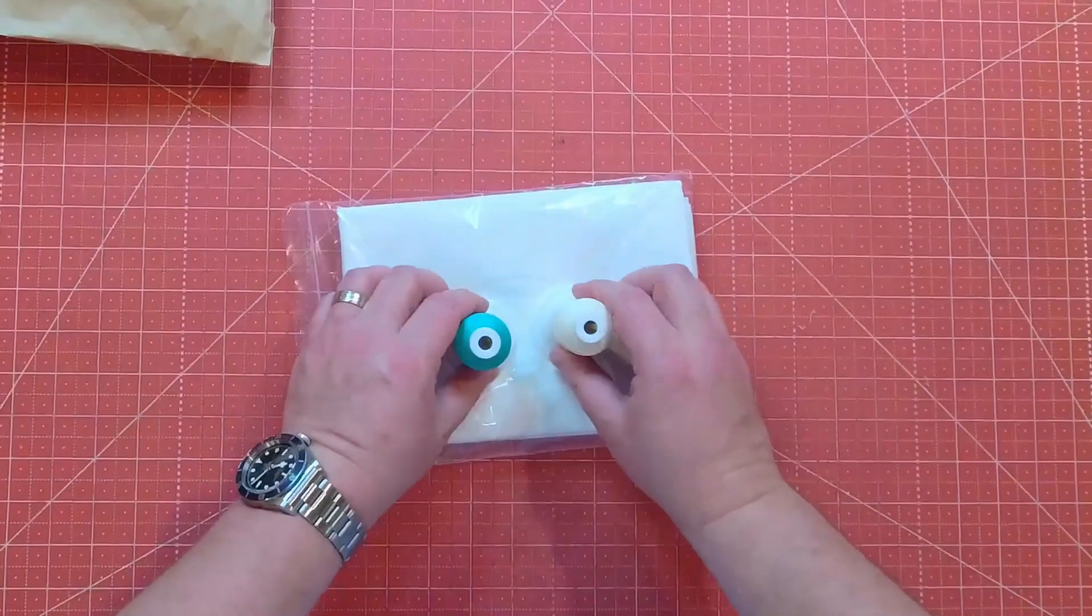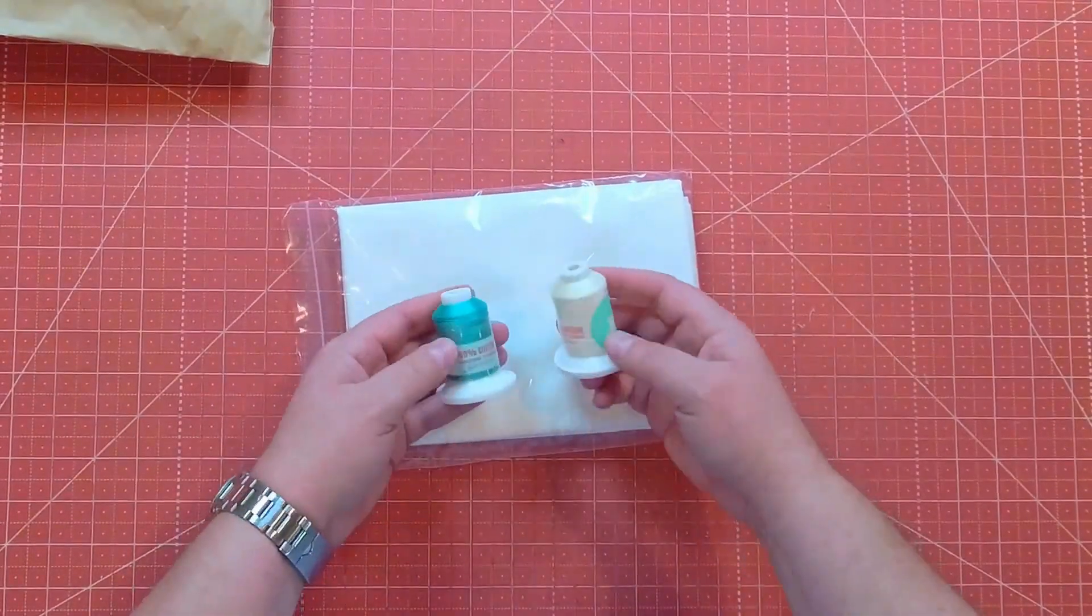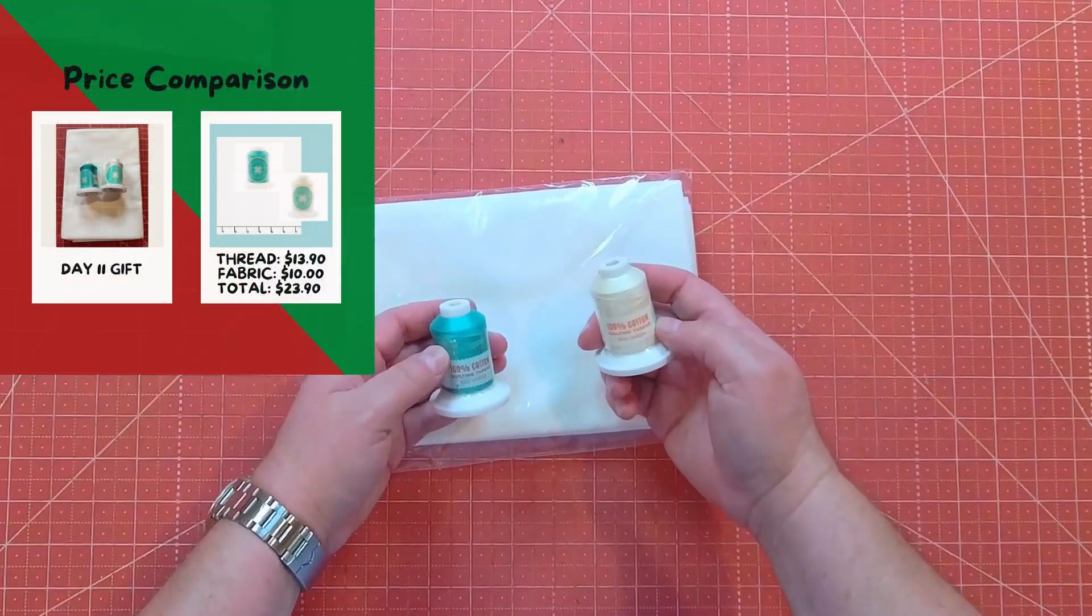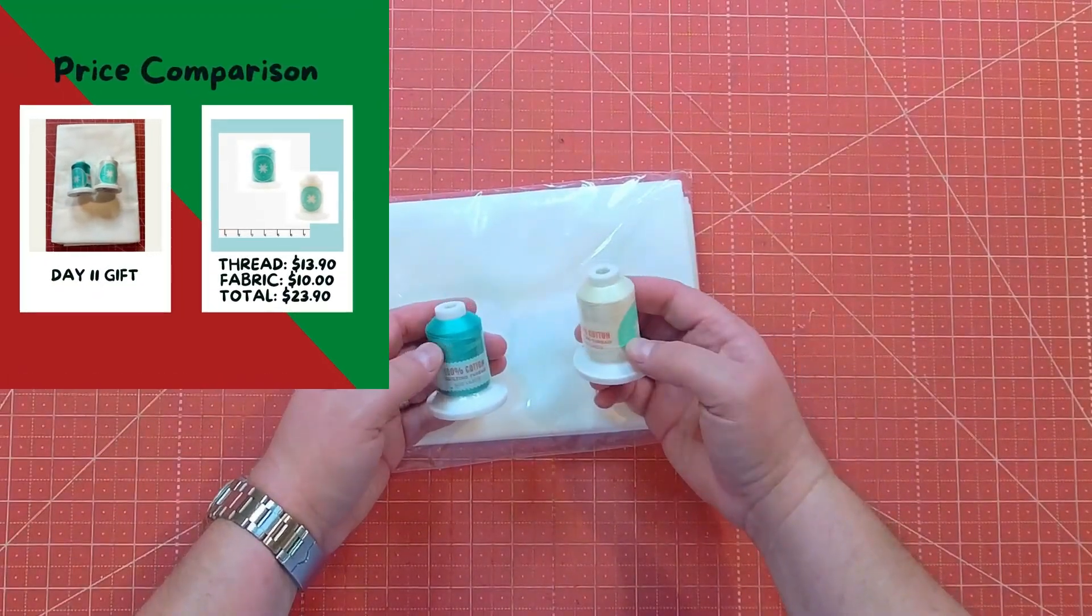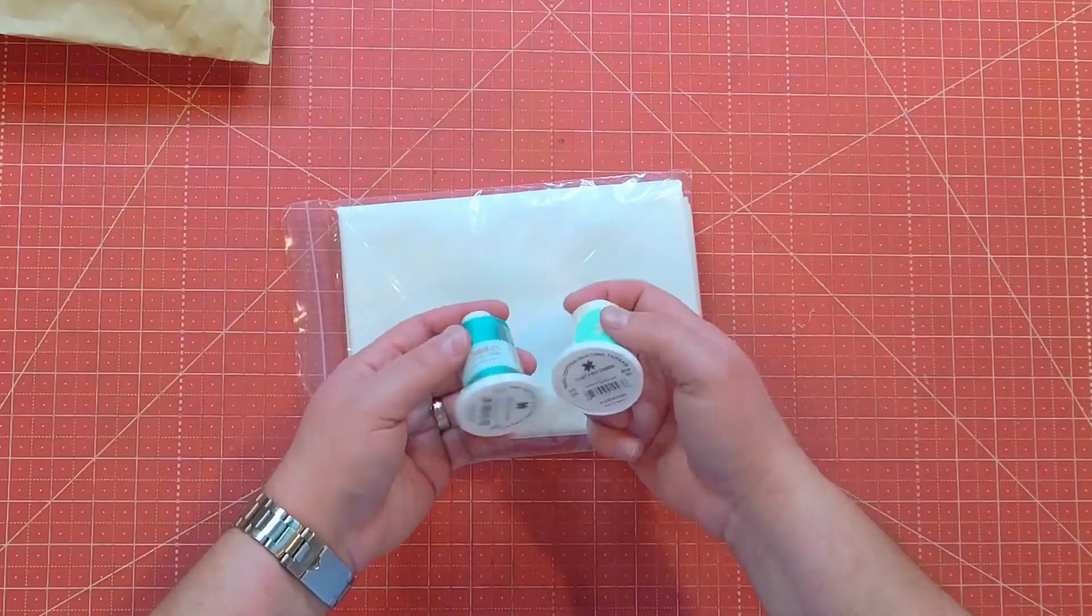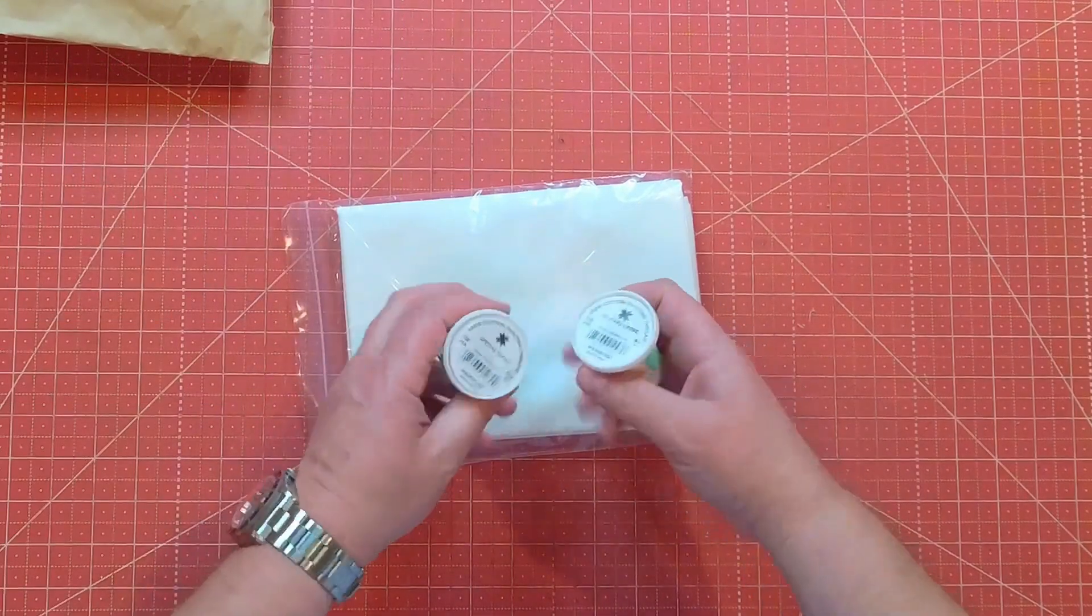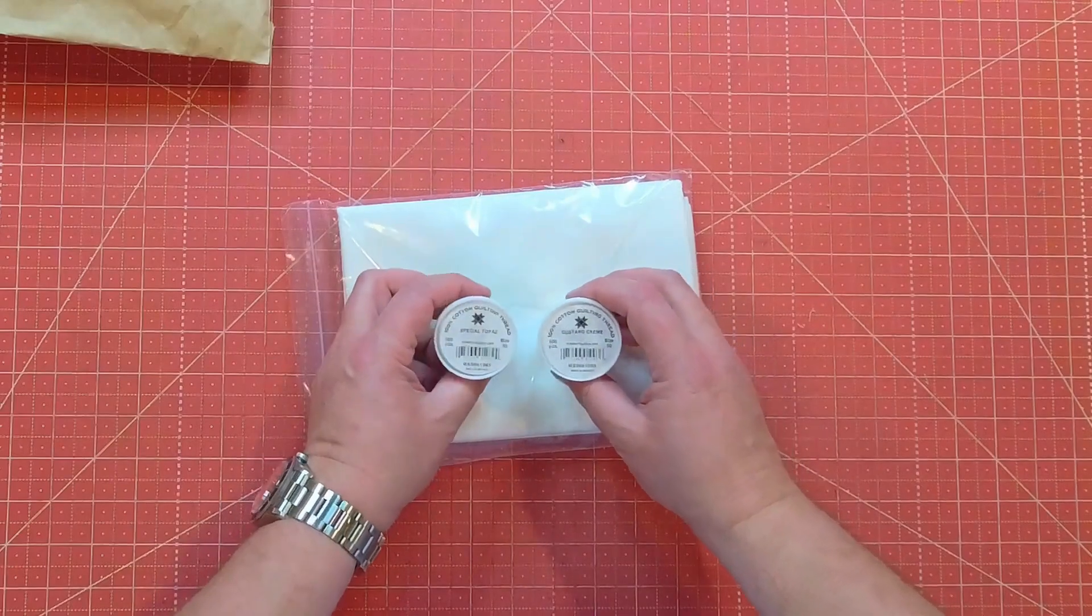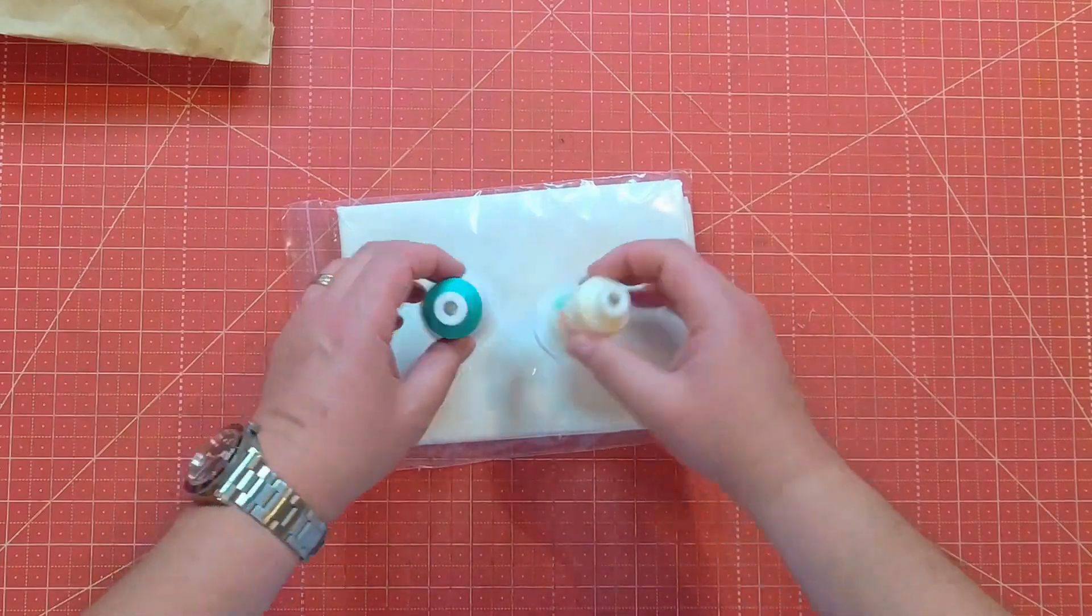So it is in fact two spools of thread, 100% cotton quilting thread, 500 yards on both of them. One is a teal-ish color, the other is cream, oh here we go, custard cream and special topaz. I don't know what's special about it, but that's okay.